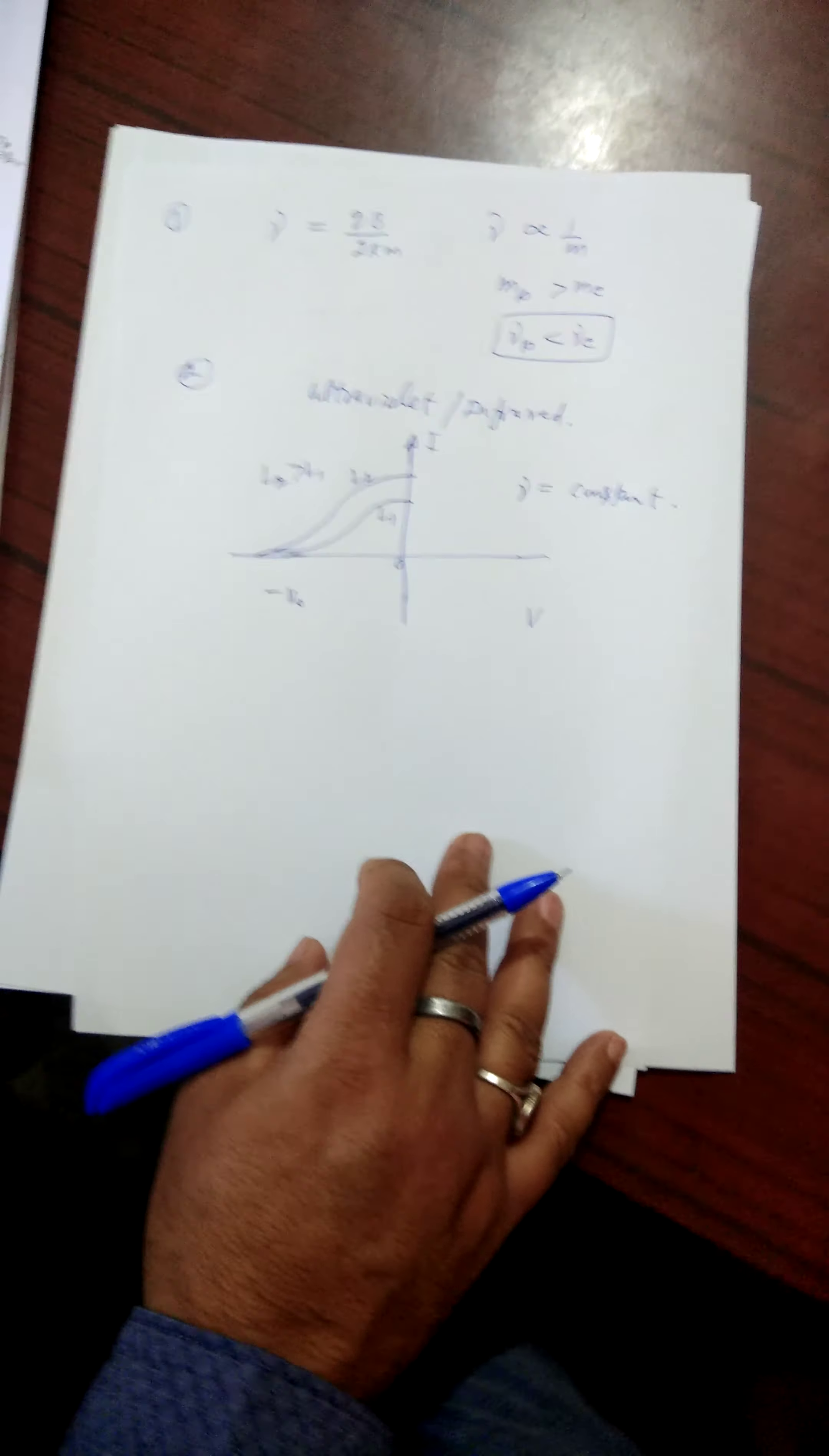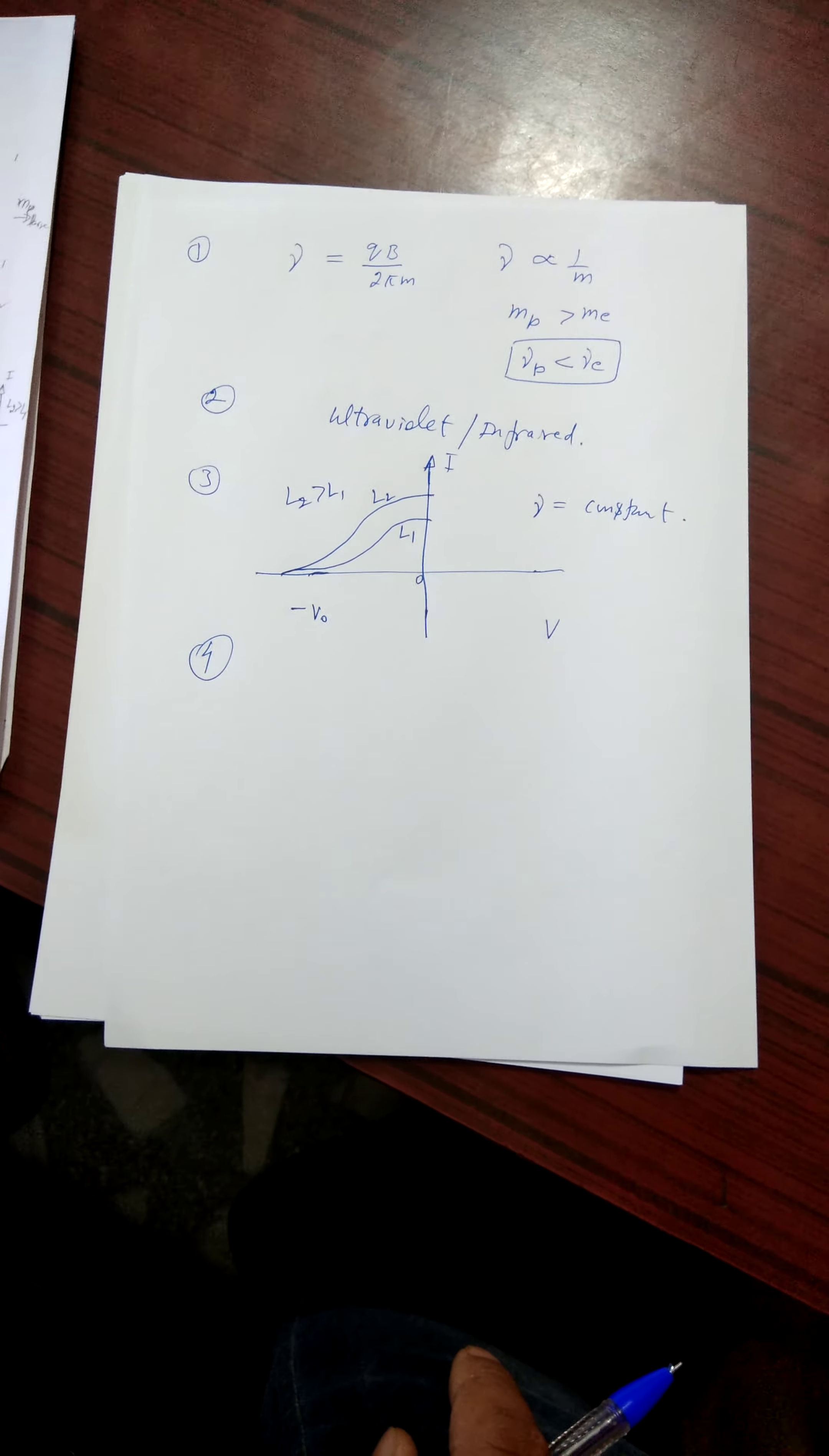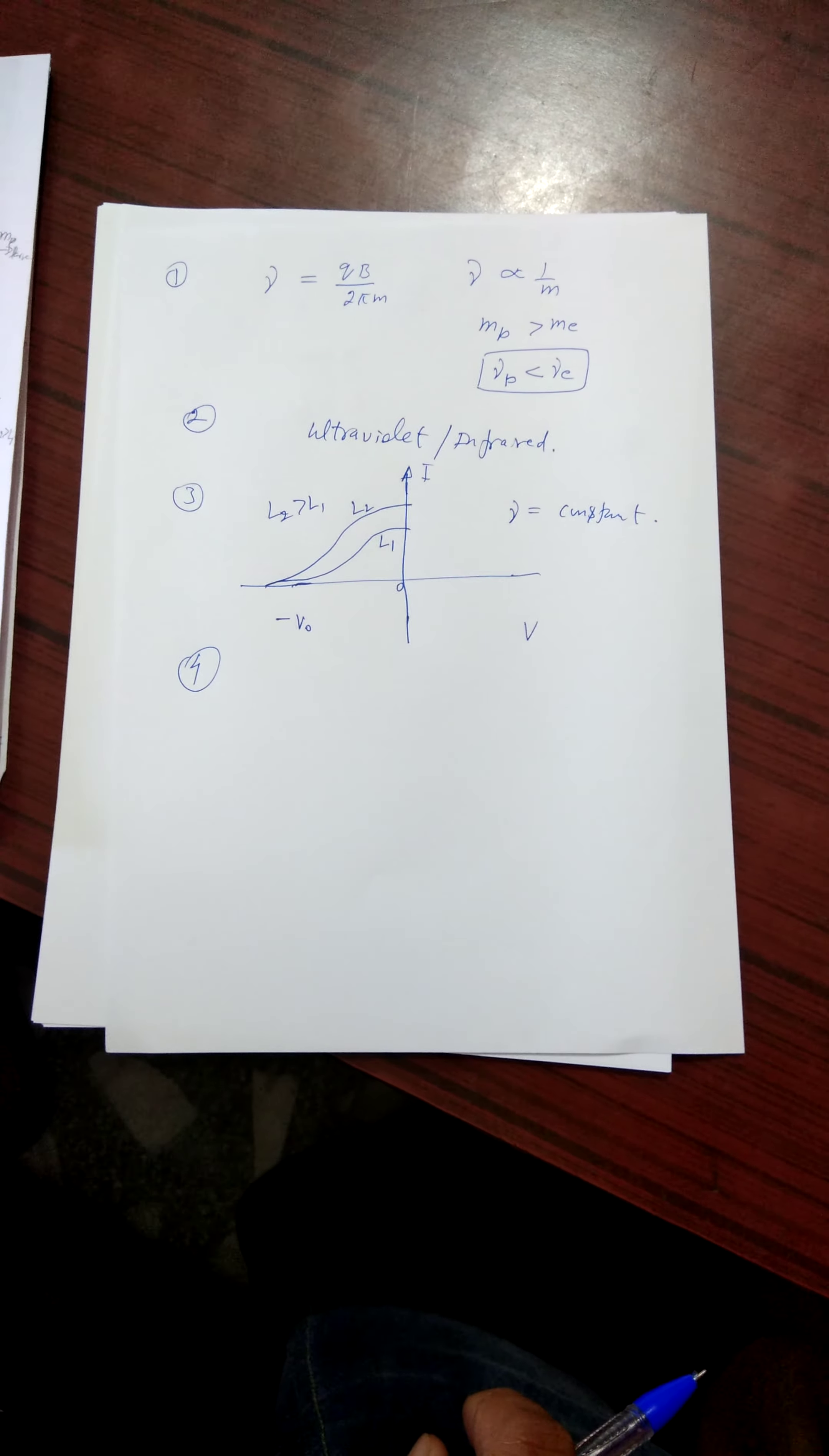Now fourth question. Four nuclei of an element undergo fusion to form a heavier nucleus with release of energy. Which of the two, the parents or the daughter nuclei would have higher binding energy per nucleon? The answer is daughter nucleus. Because when two light nuclei fuse, they form the heavy nucleus. And the binding energy is due to the mass defect. In this case, the daughter nucleus will have more mass defect than the parent's nucleus. That is the answer.